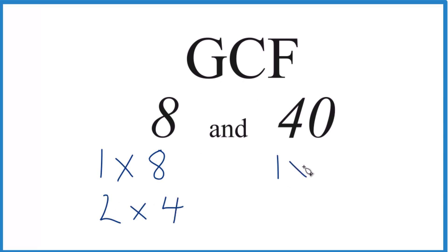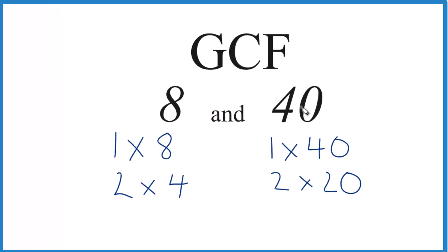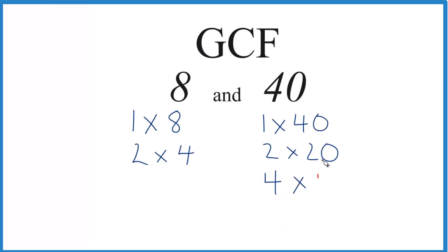For 40, 1 times 40, that equals 40. 2 times 20, 4 times 10, and then 5 times 8 equals 40. That's it. So these are the factors for 40.